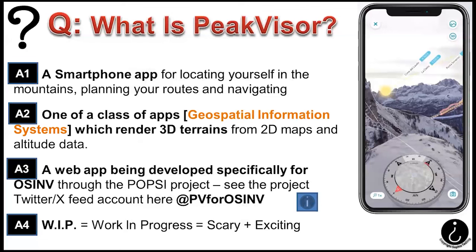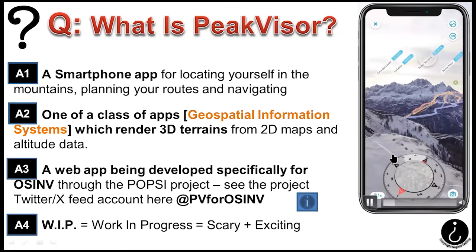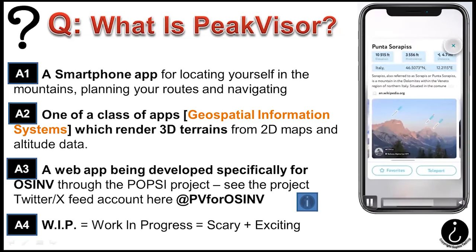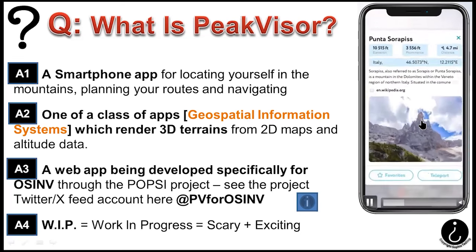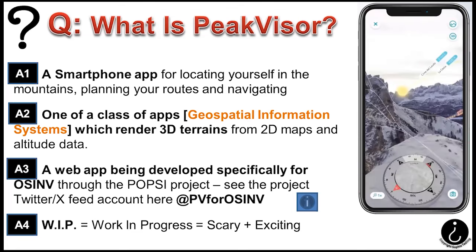So let's kick off: what is PeakVisor? Well, it's more than one thing. It started off as a smartphone app for locating yourself in the mountains. This is what PeakVisor looks like on a smartphone — it's augmented reality. It does some of the things we're interested in for open source research, but it's also waiting for inputs that your phone provides, like compass data, so it's a bit misleading for us.